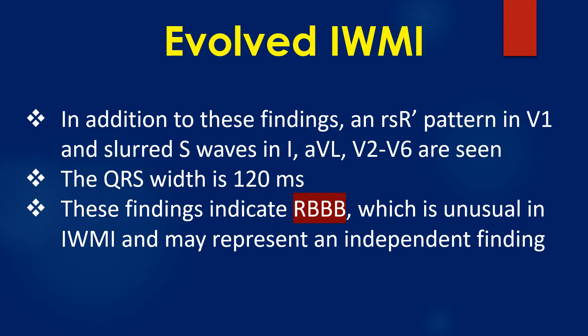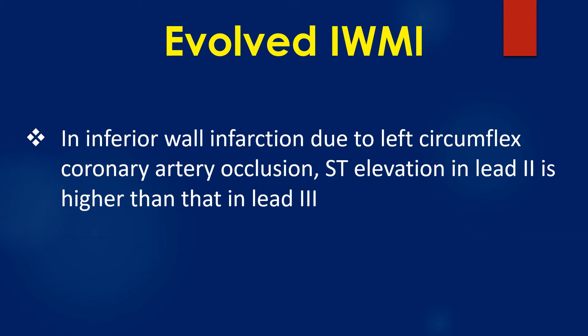In inferior wall infarction due to left circumflex coronary artery occlusion, ST elevation in lead 2 is higher than that in lead 3. In addition, an RSR' pattern in V1 and slurred S wave in leads I, AVL, and V2 to V6 are seen. The QRS width is 120 ms. These findings indicate a right bundle branch block, which is unusual in inferior wall infarction and may represent an independent finding.